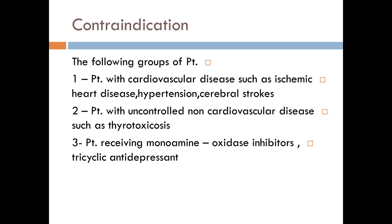When we use vasoconstrictor agents with local anesthesia, there are groups of patients to be cautious with: patients with cardiovascular disease such as ischemic heart disease, hypertension, or cerebral stroke (CVA) — we cannot use local anesthetic with adrenaline or vasoconstrictors for them. Also patients with uncontrolled non-cardiovascular disease such as hyperthyroidism, and patients receiving drugs such as monoamine oxidase inhibitors or tricyclic antidepressants, because these drugs interfere with the actions of vasoconstrictors.